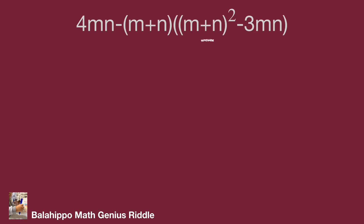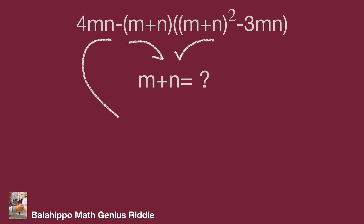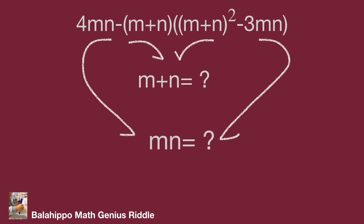The new expression will be easy to evaluate. There is an (m plus n) factor, and we need to find the value of m plus n. Also, there is an mn factor, and we need to find the value of mn. If I can find the values of m plus n and mn, the answer will be easy to find. So I'm going to find the value of m plus n and mn.